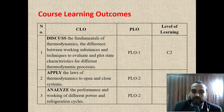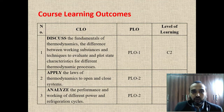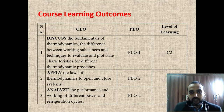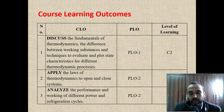At the start of the course, we have the Course Learning Outcomes, the CLOs. We have three CLOs for this course. CLO 1 is about discussing the fundamentals of thermodynamics, the difference between working substances, and techniques to evaluate and plot state characteristics for different thermodynamic processes. CLO 2 is to apply the laws of thermodynamics to open and closed systems, while CLO 3 is to analyze the performance and working of different power and refrigeration cycles.